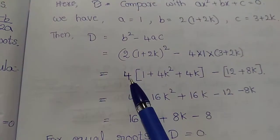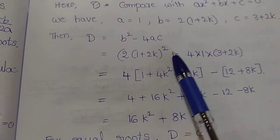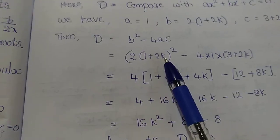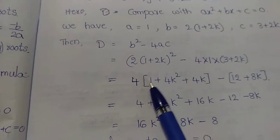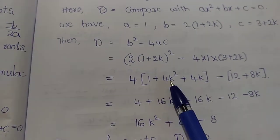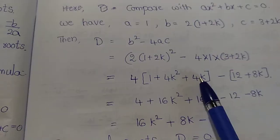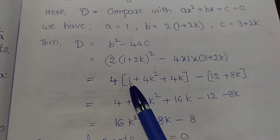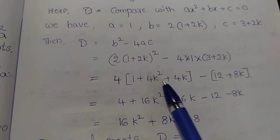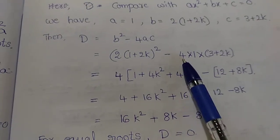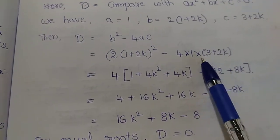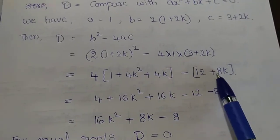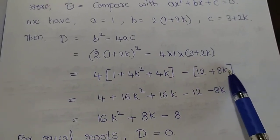Expanding: 4 times 1 plus 2k whole square. Using the identity a plus b whole square equals a squared plus b squared plus 2ab, we get 4 times 1 plus 4k squared plus 4k, minus 4 into 3 plus 2k, which gives 12 plus 8k.